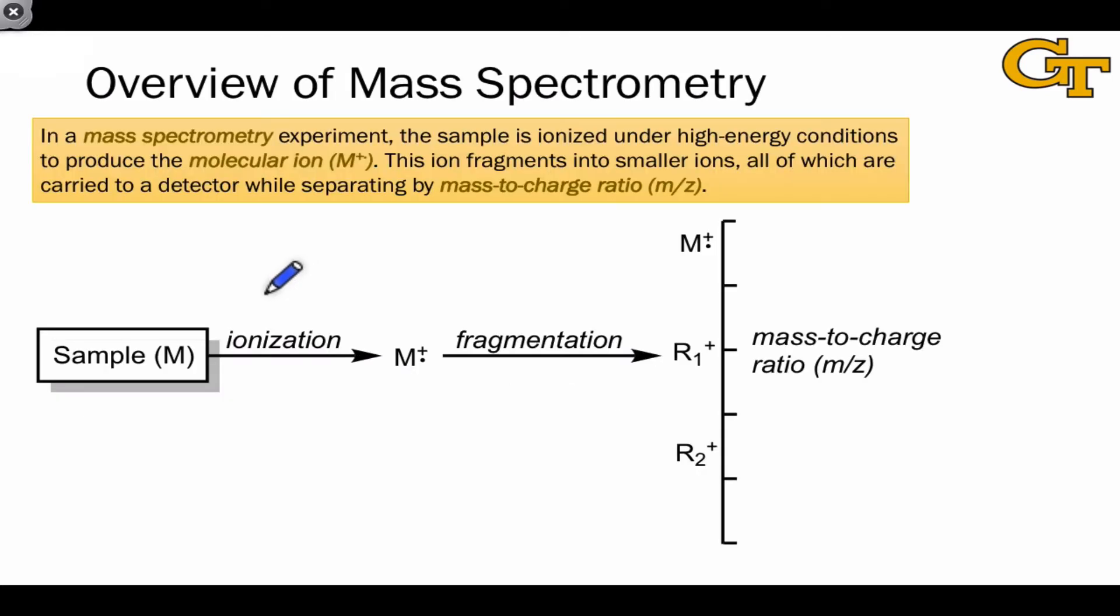We can divide every mass spectrometry experiment into three stages. In the first stage, the sample is ionized under high energy conditions, usually by bombarding the sample with many electrons. Irradiating the sample with electrons leads to the ejection of an electron from the sample, leading to this species here, which contains an odd number of electrons, meaning it contains an unpaired electron and an overall positive charge. This species is called the molecular ion, and we usually represent it with a capital M, using the plus and the dot to represent the positive charge and the unpaired or radical electron, respectively.